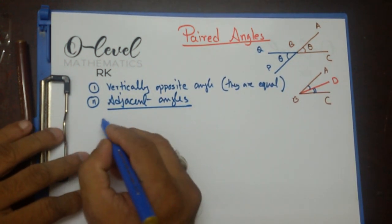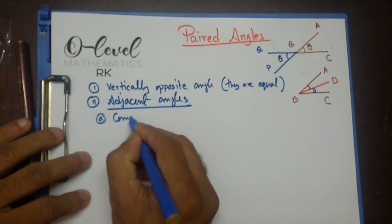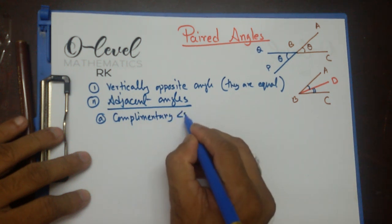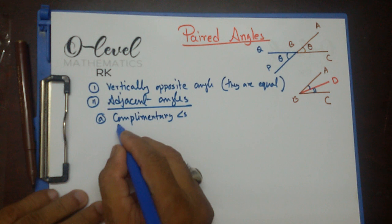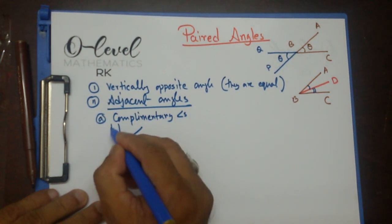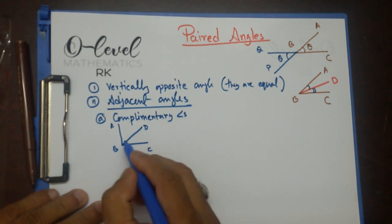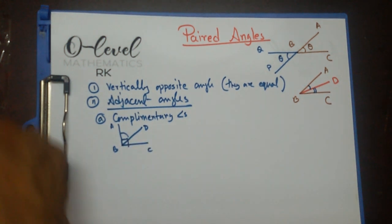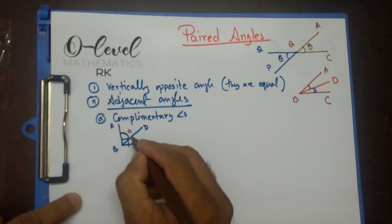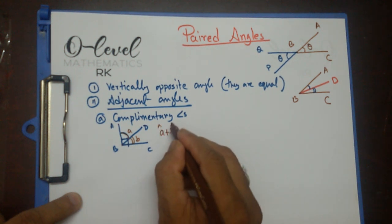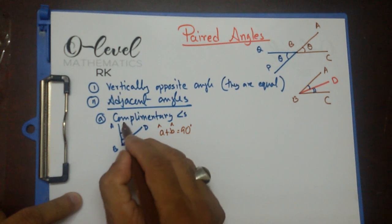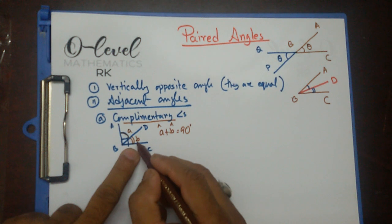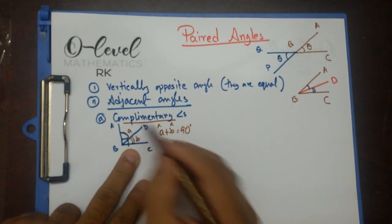In the category of adjacent angles, I have several types. One of them is known as complementary angles. Complementary angles are when the sum of two angles equals 90 degrees. If angle A plus angle B equals 90 degrees, we call that complementary. In this case, A is known as the complement of B, and B is known as the complement of A.